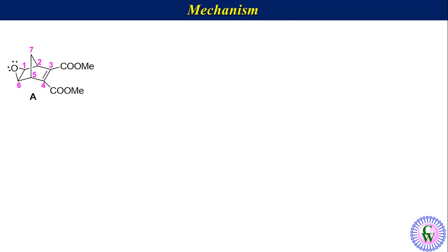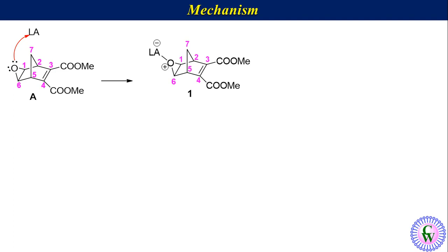Write Lewis acid as La. The epoxide oxygen donates a lone pair of electrons to the Lewis acid to produce species 1.